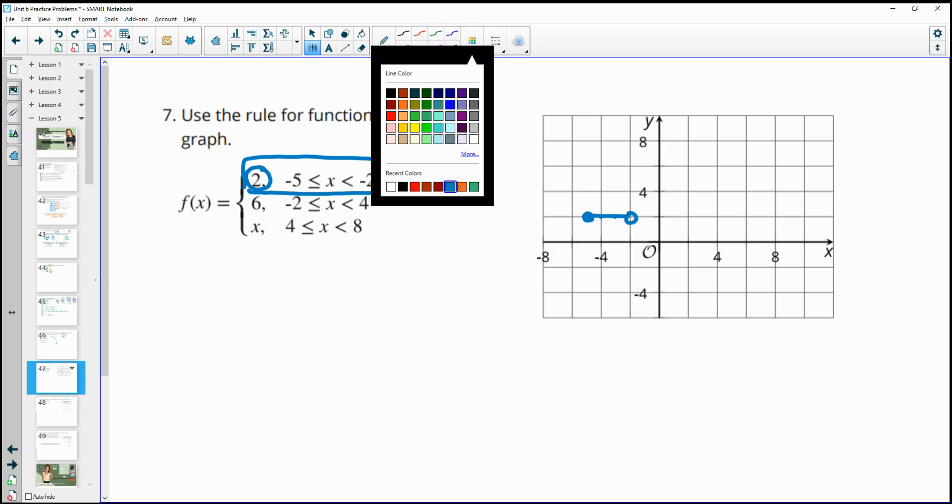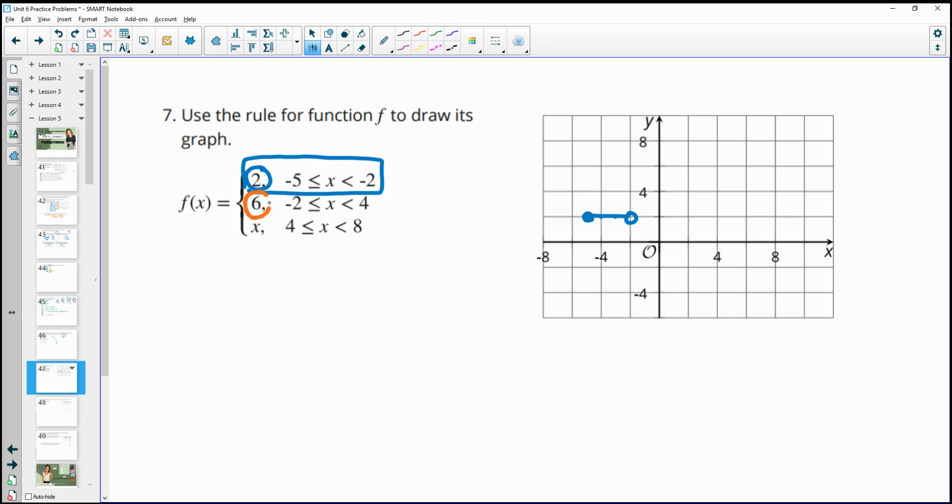Then the second part here is saying that we're going to be at 6 for all of these x values. So at negative 2, we've got the equal sign down there. At negative 2, we're going to be at 6, so we want a closed circle. And then all the values from negative 2 to 4. At negative 1, we'll be at 6, 0 will be at 6, 1 at 6, 2 at 6, 3 at 6, and then at 4, we don't have the equal sign. So we're going to be at x equals 4, we're going to have an open circle on the 6 so that we have all the numbers leading up to it being 6. So then you can just connect those.